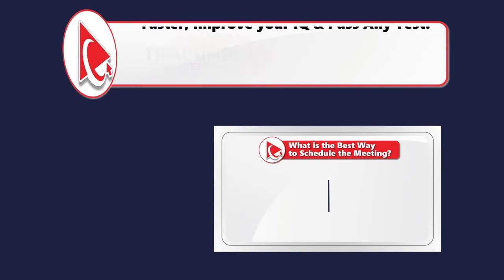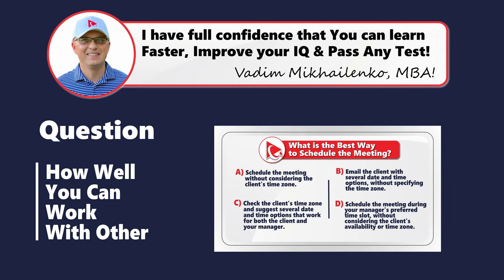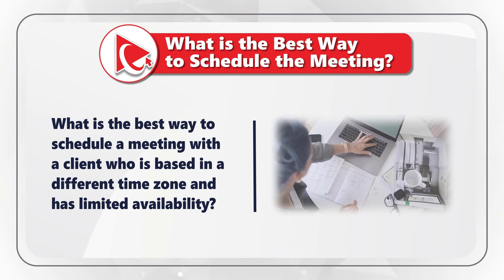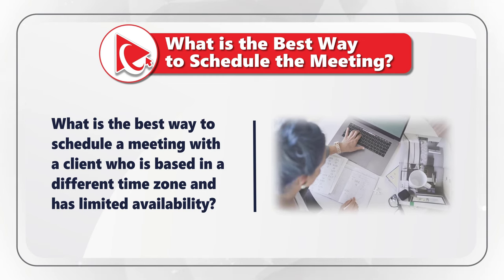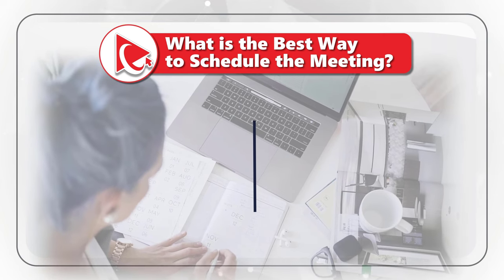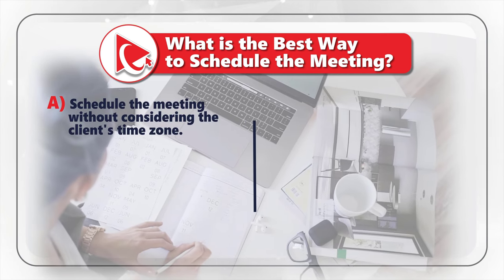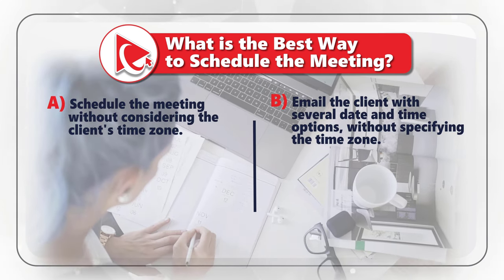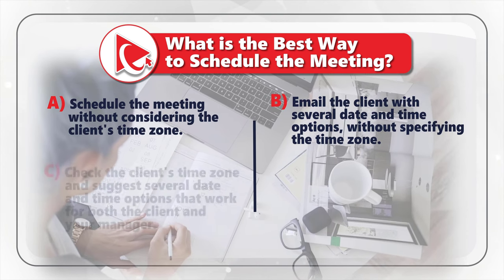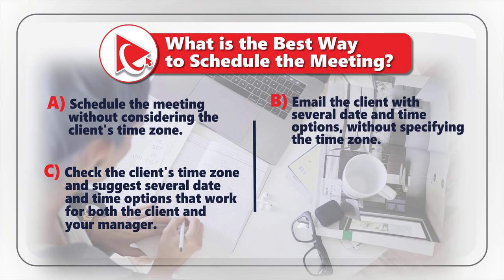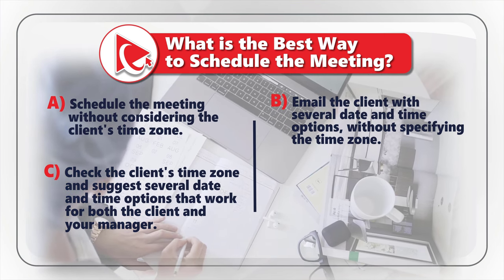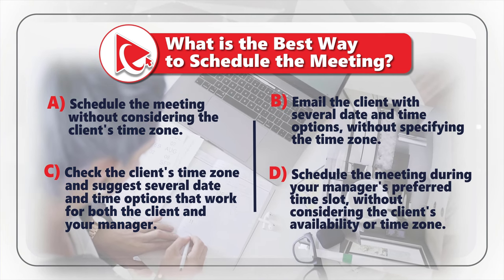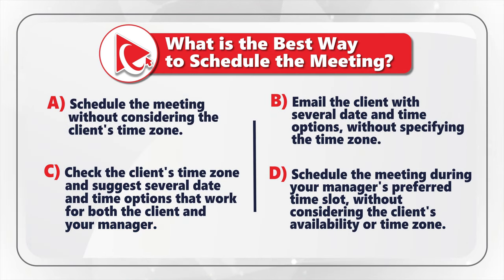Here's a question to determine how well you can work with others. You need to determine the best way to schedule a meeting with a client based in a different time zone with limited availability. Choice A: schedule the meeting without considering the client's time zone. Choice B: email the client with date and time options without specifying the time zone. Choice C: check the client's time zone and suggest options that work for both the client and your manager. Choice D: schedule during your manager's preferred time slot without considering the client's availability or time zone.